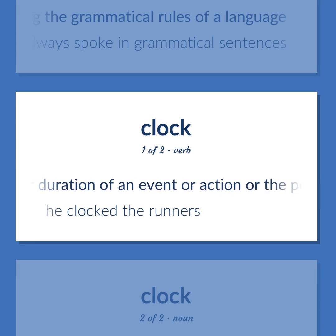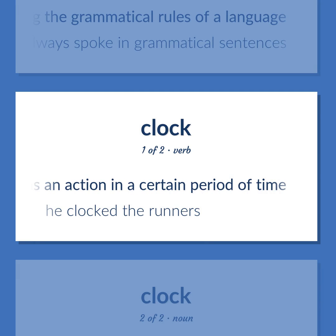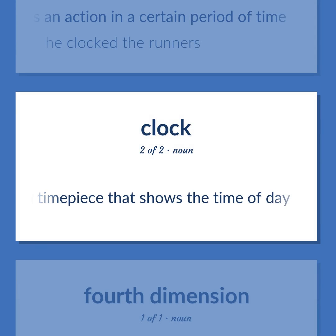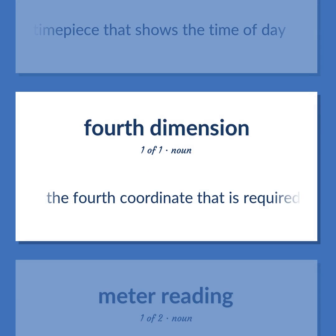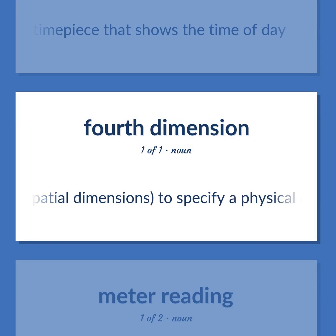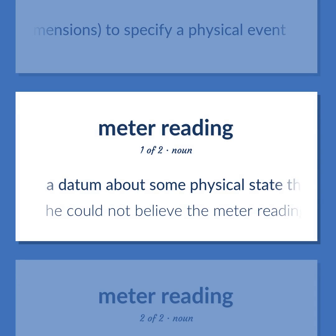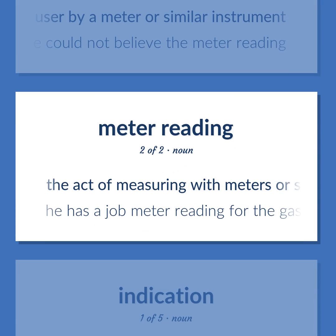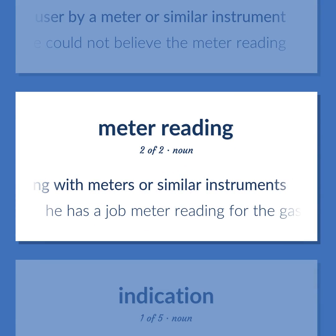CLOCK: Measure the time or duration of an event or action, or the person who performs an action in a certain period of time — he clocked the runners. A timepiece that shows the time of day. The fourth coordinate that is required, along with three spatial dimensions, to specify a physical event. A datum about some physical state that is presented to a user by a meter or similar instrument — he could not believe the meter reading. The act of measuring with meters or similar instruments — he has a job meter reading for the gas company.